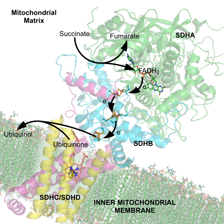Iron-sulfur clusters are complexes of iron and sulfur atoms held within proteins by cysteinyl residues. They play both structural and functional roles, including electron transfer, redox sensing, and as structural modules.